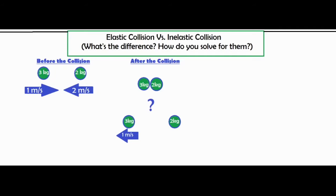For the most part, these types of collisions are solved for by the conservation of momentum, which is basically telling you the total momentum before the collision equals the total momentum after the collision.